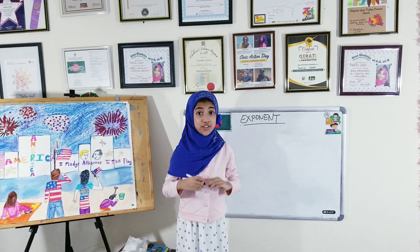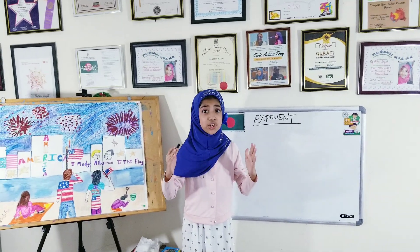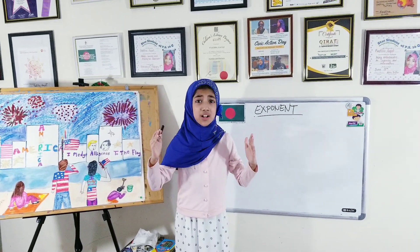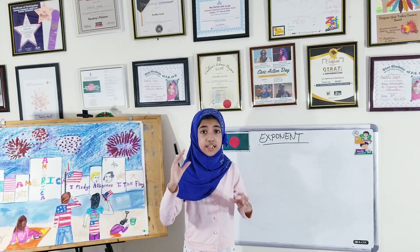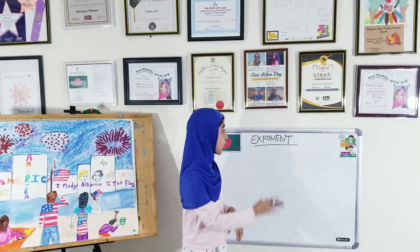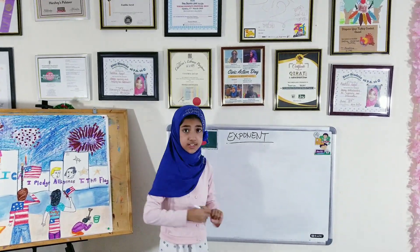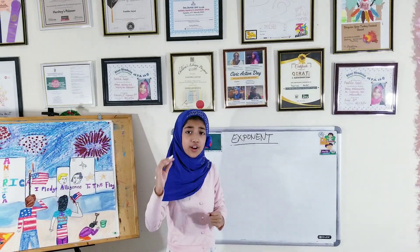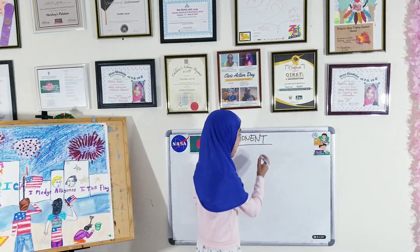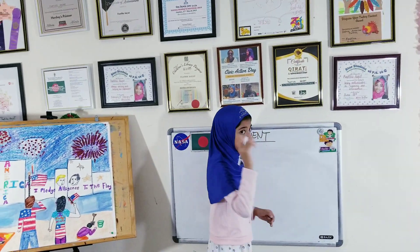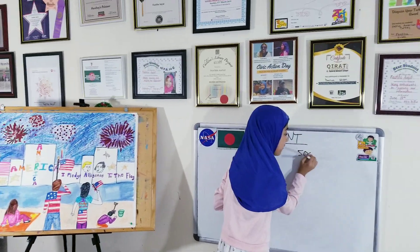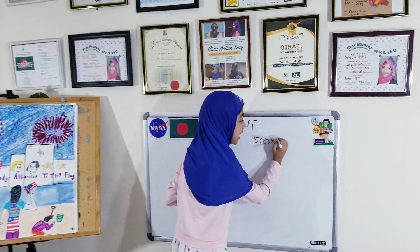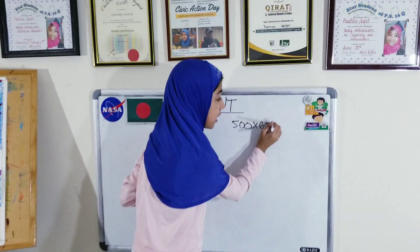As-salamu alaykum, dear viewers. Today I'm going to show you how to multiply big numbers in a very easy way, which is called exponents. For example, we have two big numbers: 500 times 600.